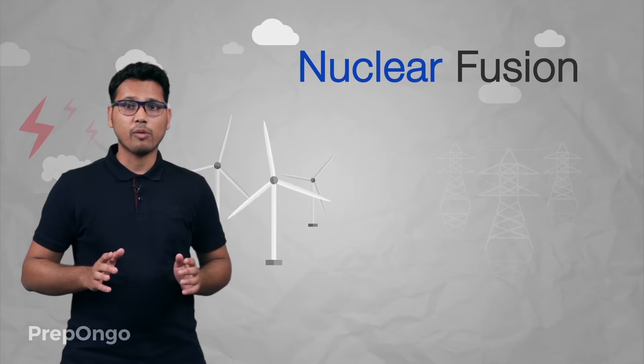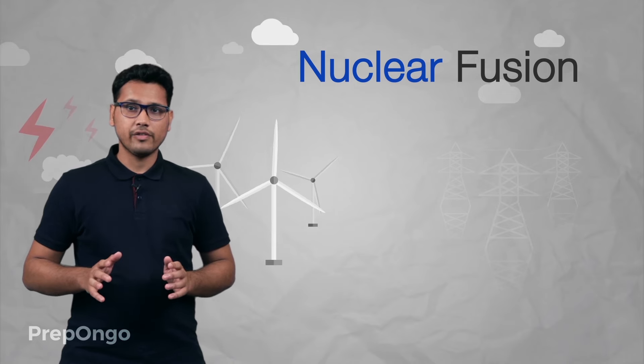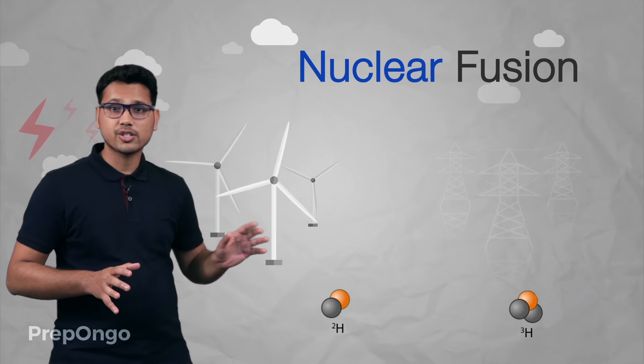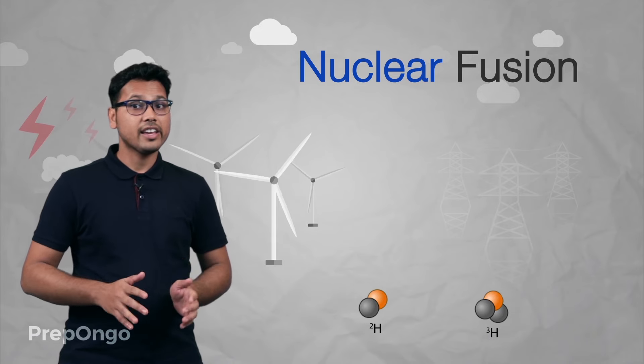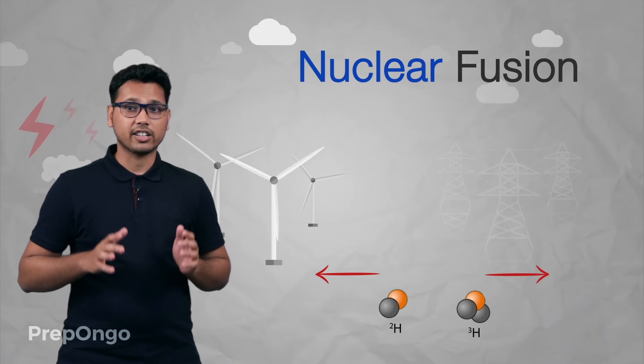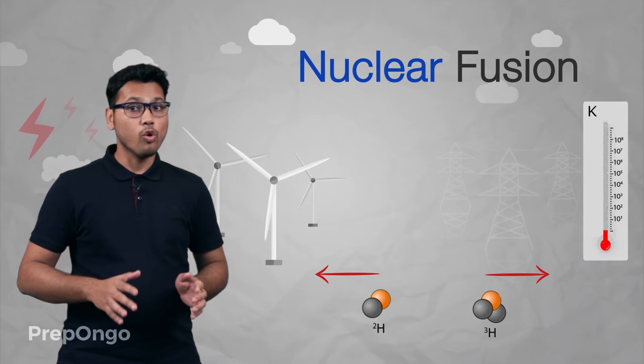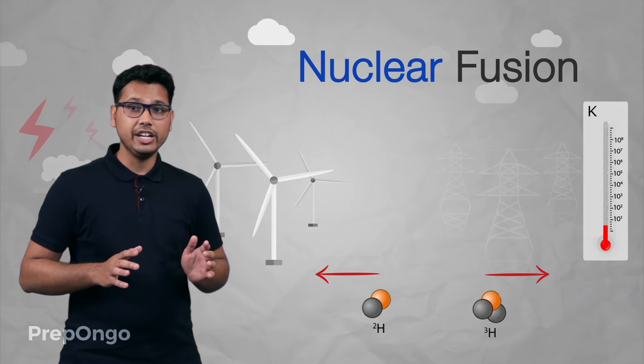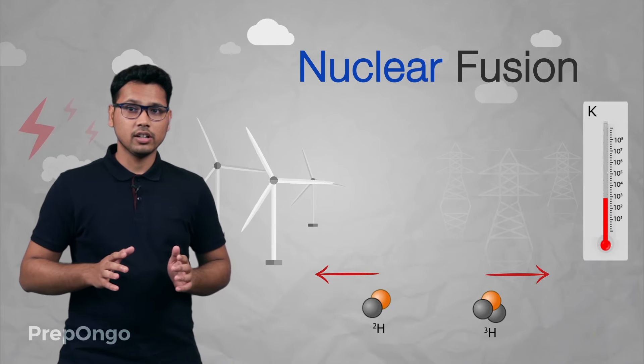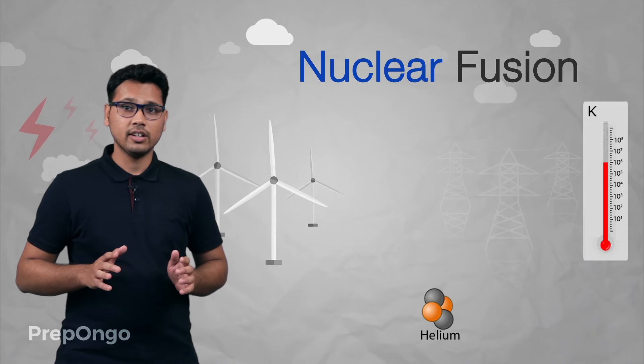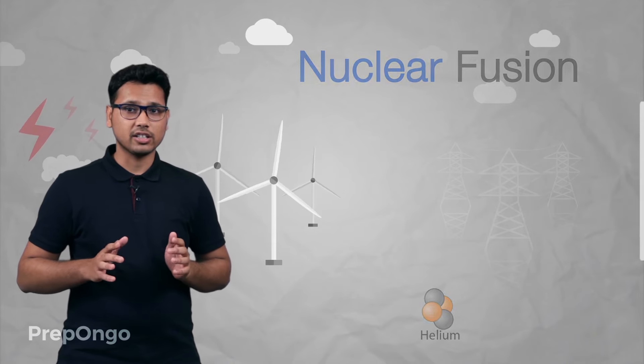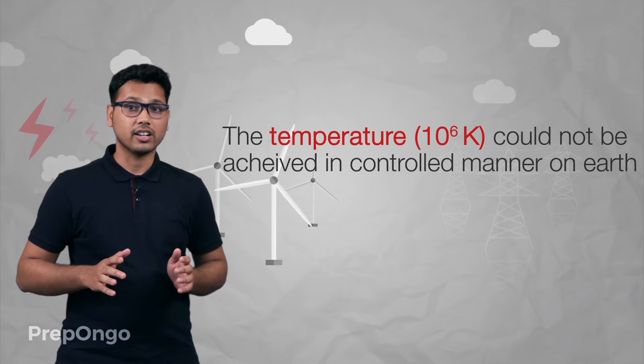There is one problem with fusion. When we try to bring these two nuclei together, they experience a large amount of electrostatic repulsion. And to overcome that repulsion we need very high temperatures, up to 10 raised to power 6 Kelvin, and those temperatures could not be achieved in a controlled manner on earth.